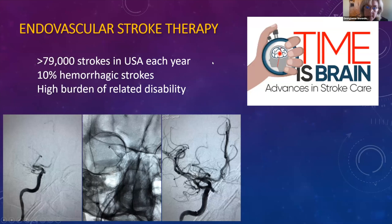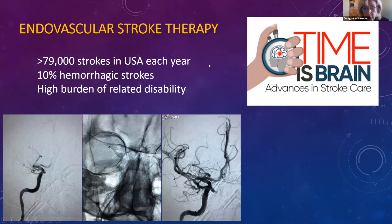Time is brain. Every minute, almost 2 million brain cells die. There are almost 80,000 strokes in the United States every day, and it is a very high burden for related disability and cost to society and patients that don't do well.